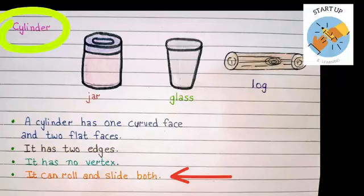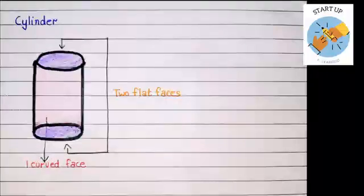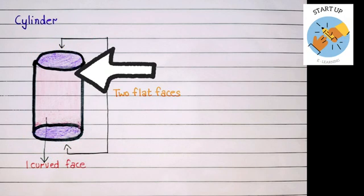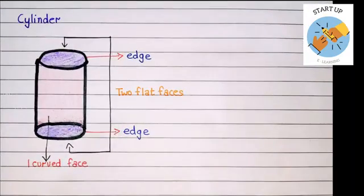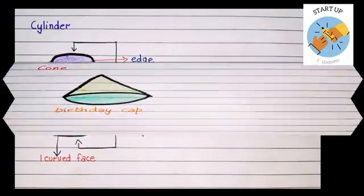A cylinder has these qualities that it can roll and slide both. Let's have a look again over this. A cylinder has two flat faces. The purple faces are two flat faces. And the pink face is the curved face. A cylinder has two edges. The edges is being shown with the red arrow and blue color.